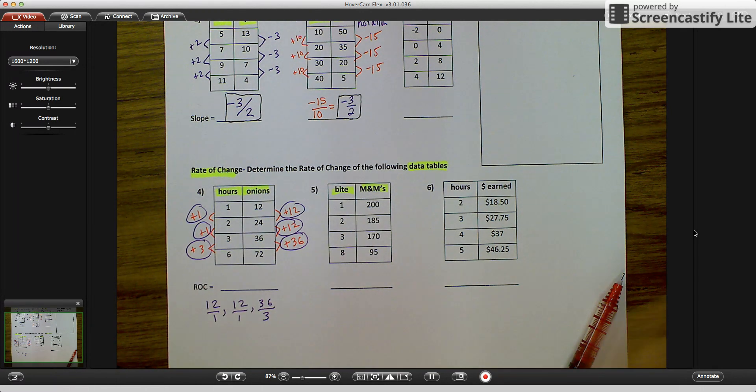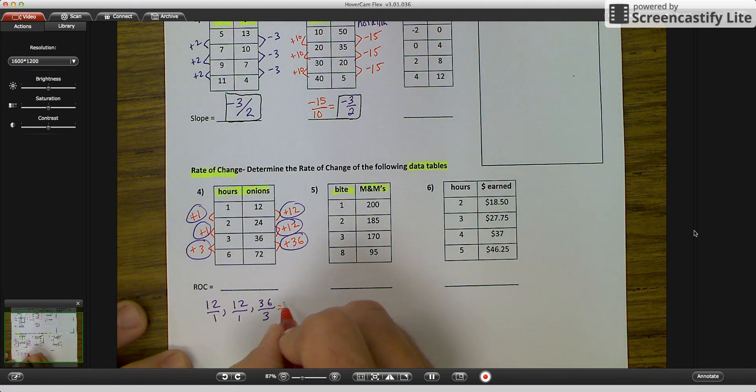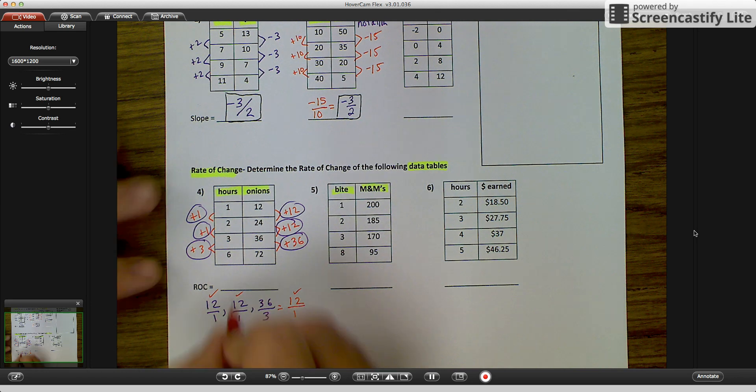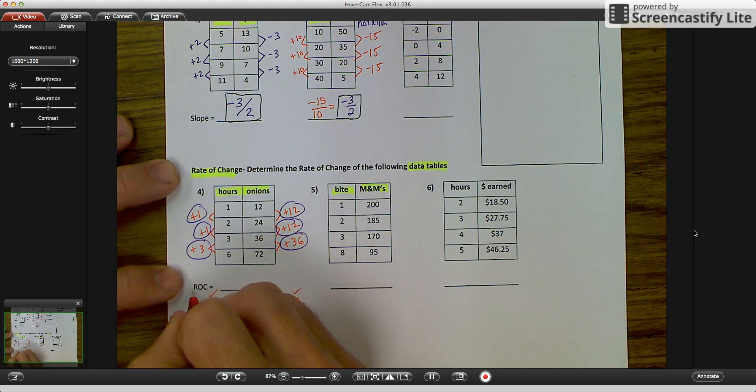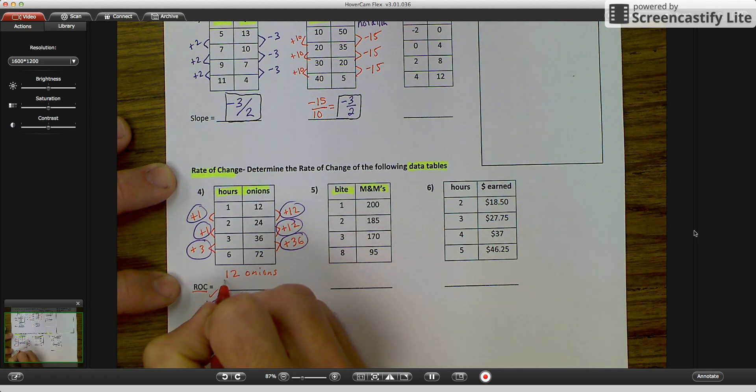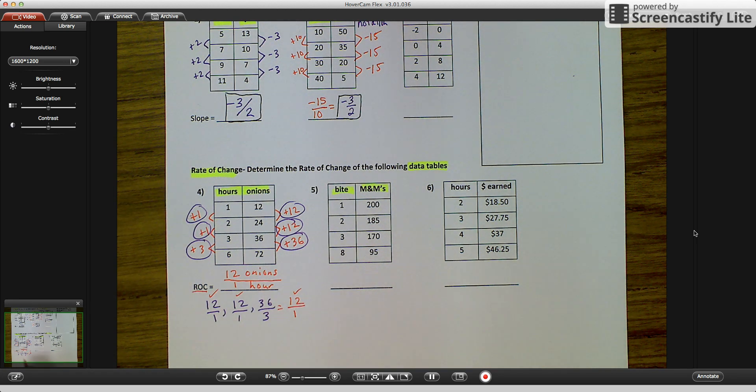My third rate of change is 36 over 3. Now, I see that 36 over 3, and I'm going to see if I can reduce it, because that's what we always want. We want a constant rate of change. And I can. And when I reduce it, 3 goes into 36 12 times, so 12 over 1. So we have 12 over 1, 12 over 1, 12 over 1. It is constant. So our rate of change, ROC, is 12, 12 what? 12 onions for every 1 hour. And that's our rate of change for the fourth example.